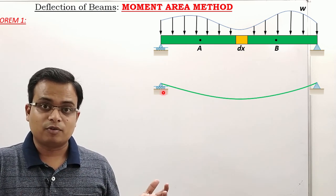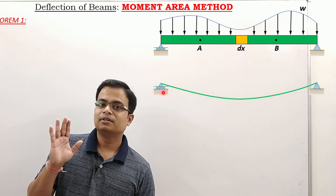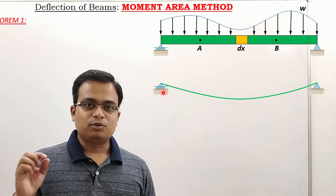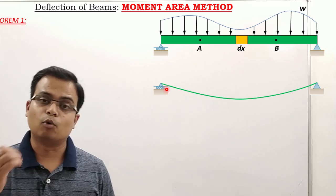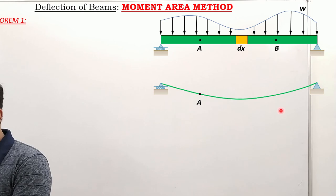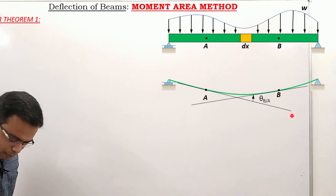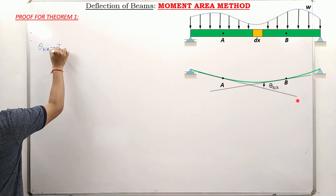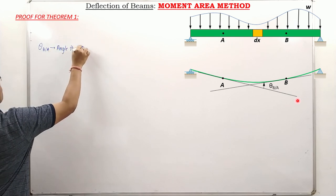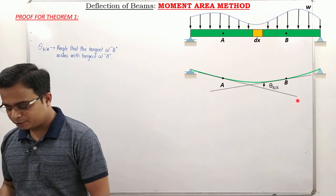The deflection in a real beam should be minimum — not even visible to the naked eye. You cannot avoid it completely, but it must be small. So: we have two points A and B, a tangent at A and a tangent at B. The angle between these tangents is theta_B_to_A — the angle that the tangent at B makes with the tangent at A.